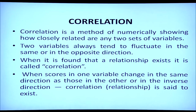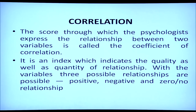When scores in one variable change in the same direction as those in the other, or in the inverse direction, a correlation or relationship exists. The score through which the psychologist expresses the relationship between two variables is called the coefficient of correlation. It is an index which indicates both the quality — whether positively or negatively correlated — as well as the quantity of the relationship. With any two variables, three possible relationships exist: either a positive correlation, a negative correlation, or no relationship at all.